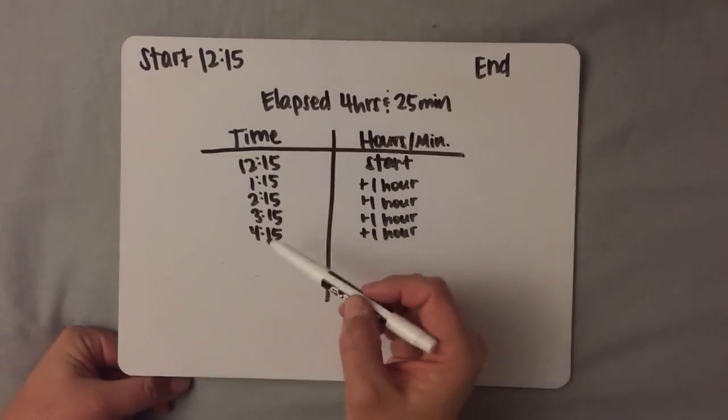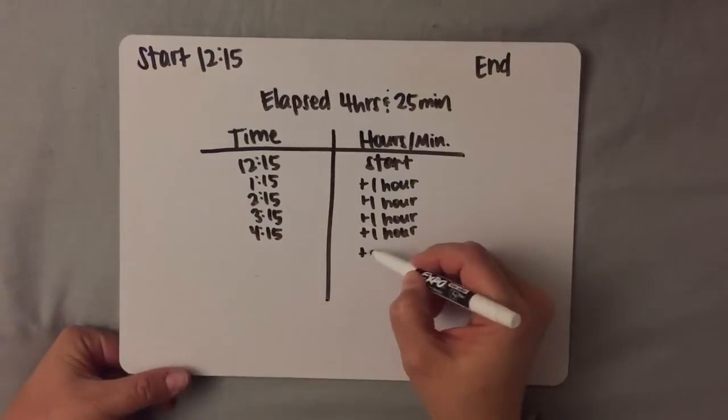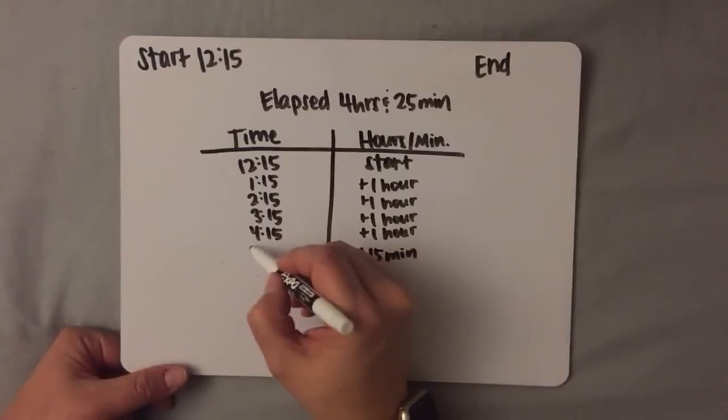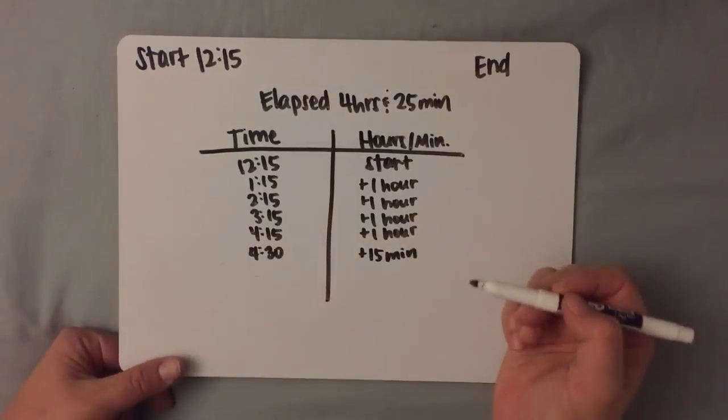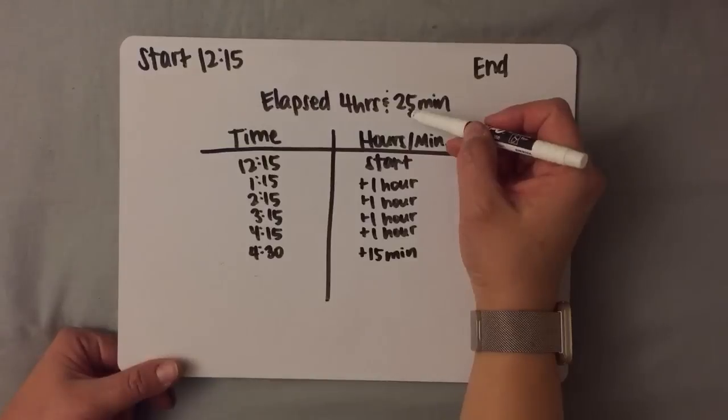So, I know that it's easy to go from 4:15 to 4:30 by adding 15 minutes. So I'm going to add 15 minutes, and I'm going to go from 4:15 to 4:30.